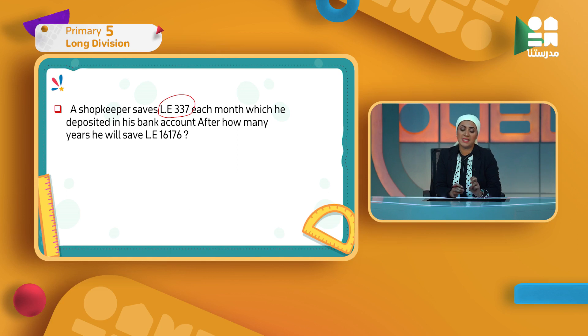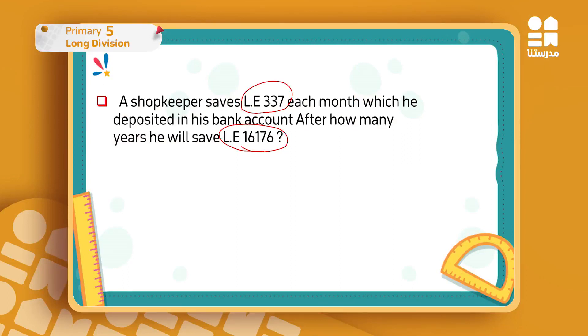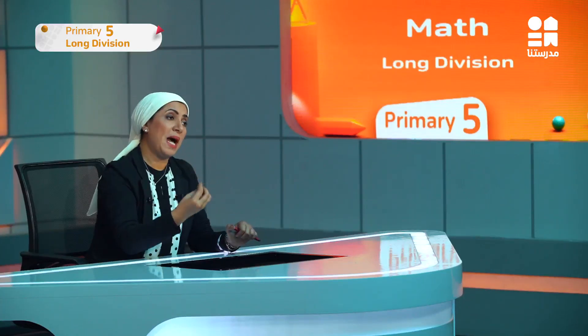After how many years he will save 16,176 LE? In the story problem, after many years he will have a lot of money. He saves 337 LE every month, so here I think I'll divide a big amount of money by how much he saves each month to find how many years.